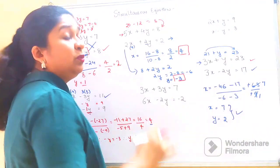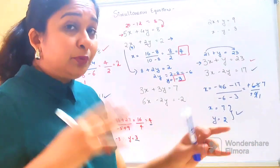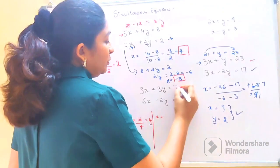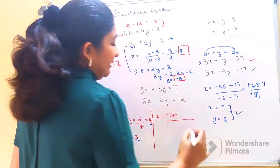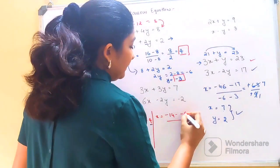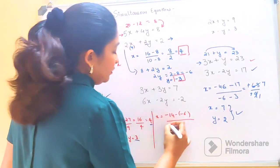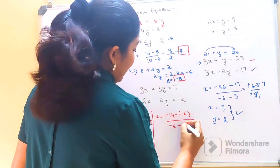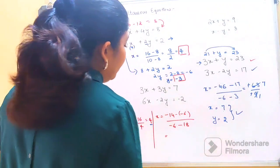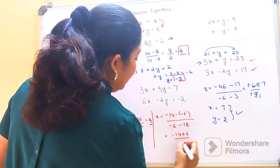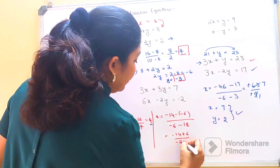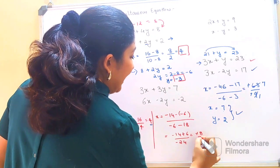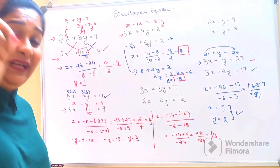Now for a case where the answer is a fraction — don't worry, it's absolutely simple. Here: x equals minus 2 into 7 gives minus 14, minus sign, then minus 2 into 3 gives minus 6. For the denominator: minus 2 into 3 gives minus 6, minus sign, then 6 into 3 gives 18. So we get minus 14 plus 6 over minus 24, which simplifies to minus 8 over minus 24, giving x equals 1/3.